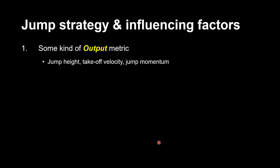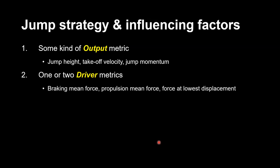I kind of stole the skeleton of this idea from John McMahon, who's a really good guy, really bright, who doesn't mind sharing his knowledge. Essentially, we want to report at least one kind of output metric—jump height, takeoff velocity, or jump momentum (the athlete's body mass multiplied by how quickly they're moving at takeoff). One or two driver metrics—the things that drive that performance. We're using a force plate, so let's think about forces: maybe the average force applied during the braking or propulsion phase, maybe the force at lowest displacement that marks the transition from down to up.